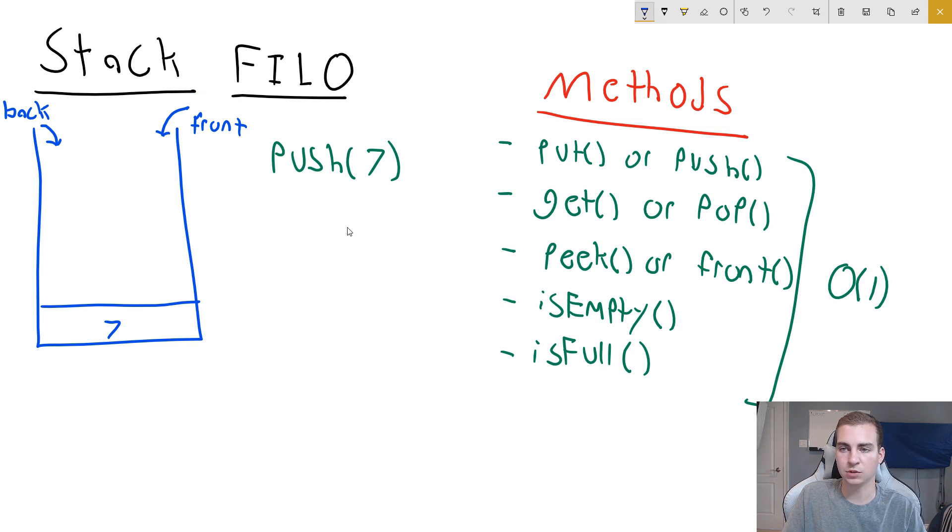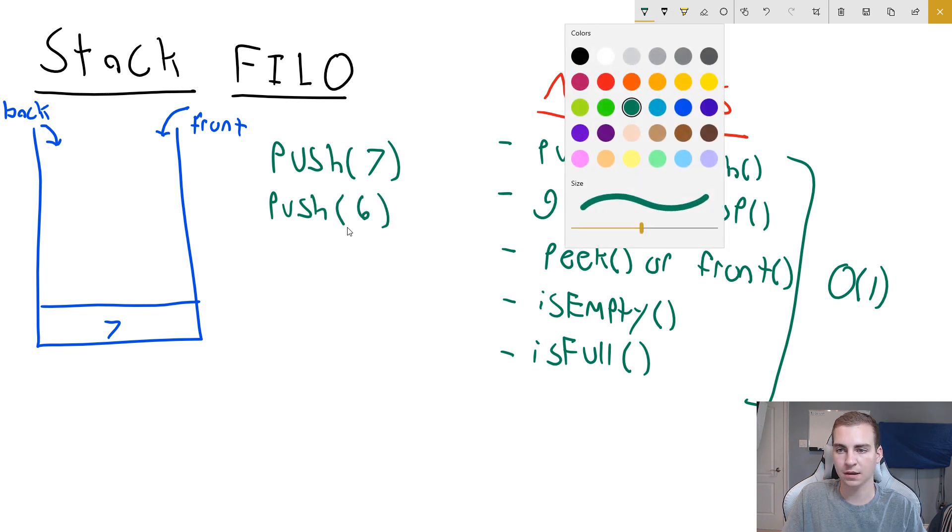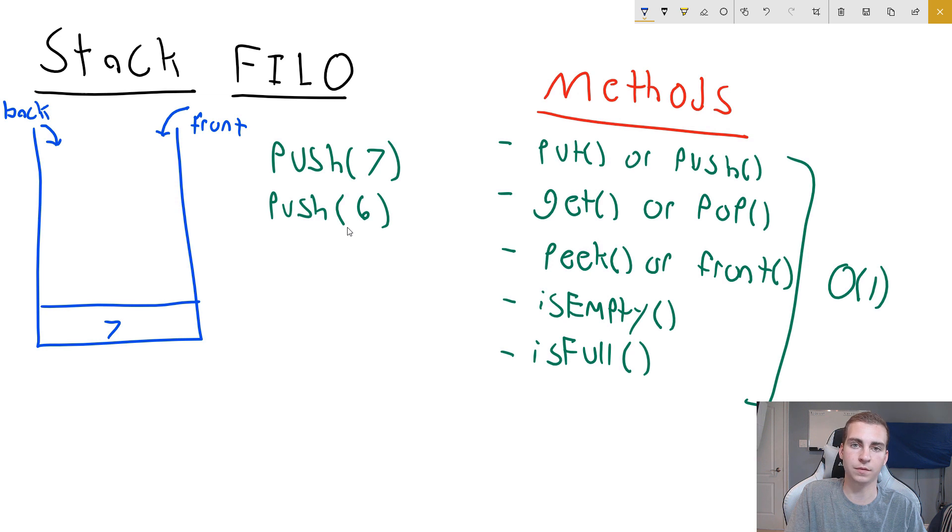Now if we go and we decide to push another item onto our stack, let's do that. And let's see what happens. When we push, let's say the item six onto our stack. Well, six is going to come in through the front, but it's also coming in through the back because there's only one end. And well, we're going to get six on top of seven. And that is how we push or add items onto the stack. And notice that they stack.